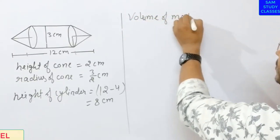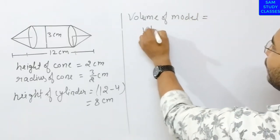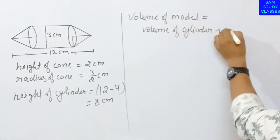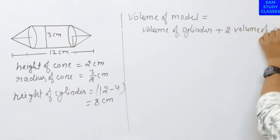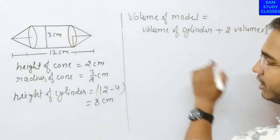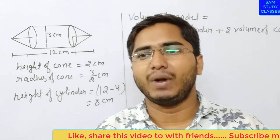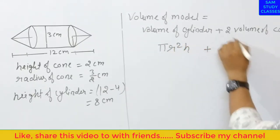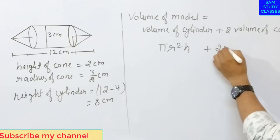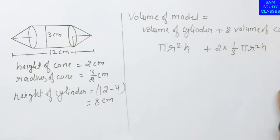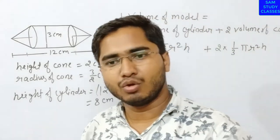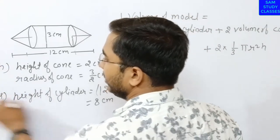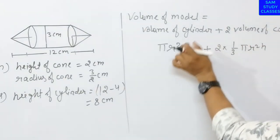Volume of model equals volume of cylinder plus two times volume of cone. Volume of cylinder ka formula kya hota hai? π·r²·H. Aur volume of cone ka formula hota hai 1/3·π·r²·h. Dono ka radius same hai, height dono ki alag hai. You can write cylinder height as capital H and cone height as small h.